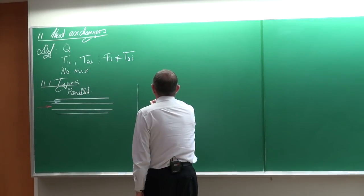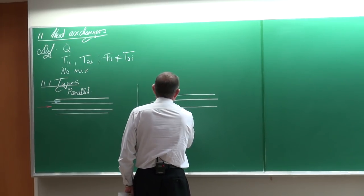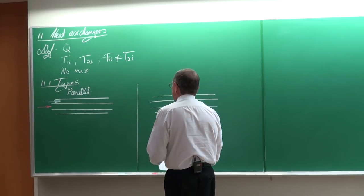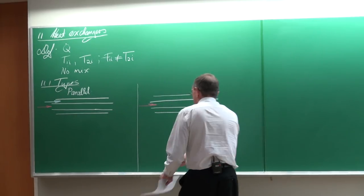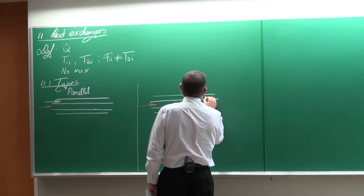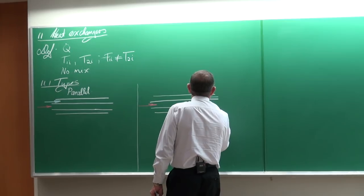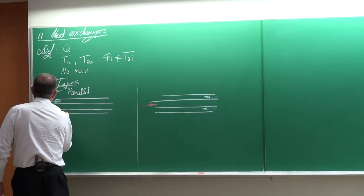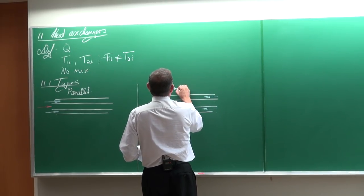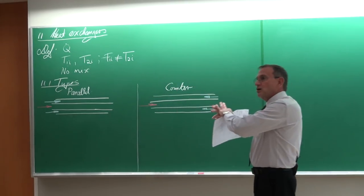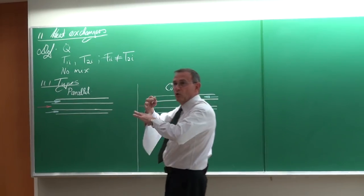The other type is sort of the opposite. Again one stream is within another — the inlet stream at high temperature and the other one in the annulus — but flowing in the opposite direction. This is called a counter flow heat exchanger, because the directions are different compared to where they flow in the same direction.